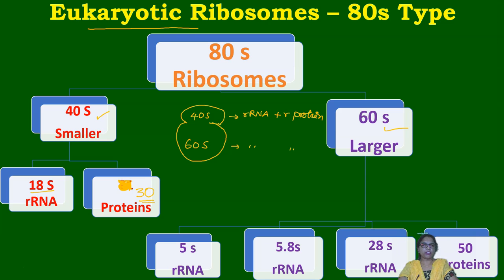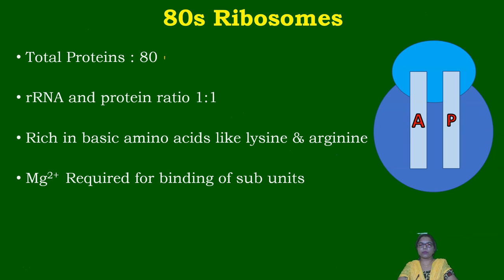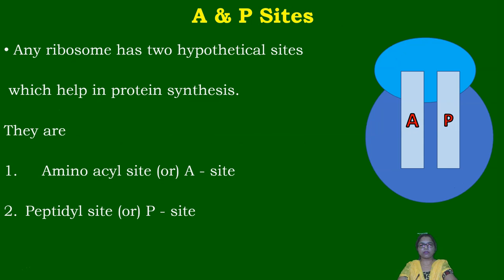The 60S larger subunit contains three rRNAs: 5S rRNA, 5.8S rRNA, and 28S rRNA, along with around 50 proteins. Together, the 80S ribosome contains about 80 proteins in total. The ratio between rRNA and proteins is 1:1, and like prokaryotic ribosomes, they are rich in lysine and arginine, with magnesium ions required for subunit binding.